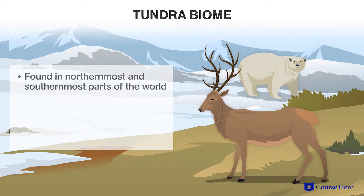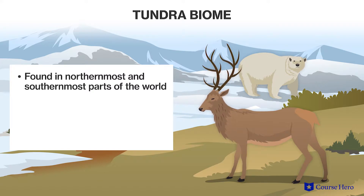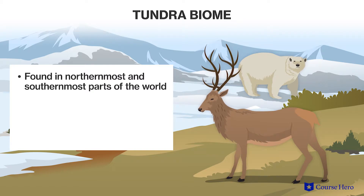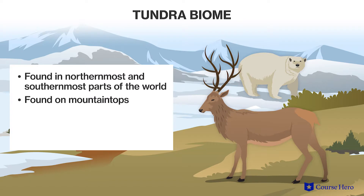The tundra biome can be found in the northernmost and southernmost parts of the world, and it covers expansive areas of the Arctic between the taiga and polar ice. Parts of Antarctica in the south also qualify as tundra, but this biome is mostly considered a desert due to its lack of rainfall. Tundra is also found on mountaintops such as the top of Mount Kilimanjaro.